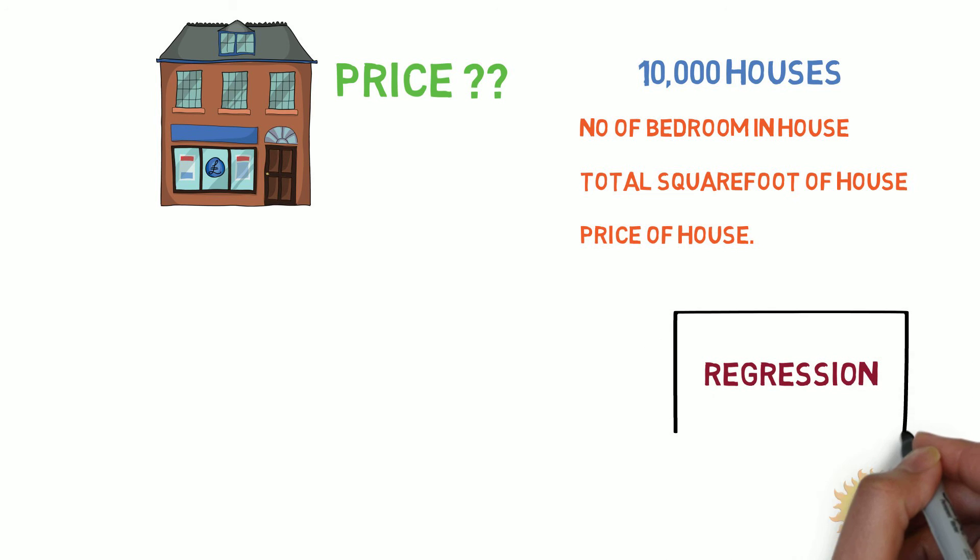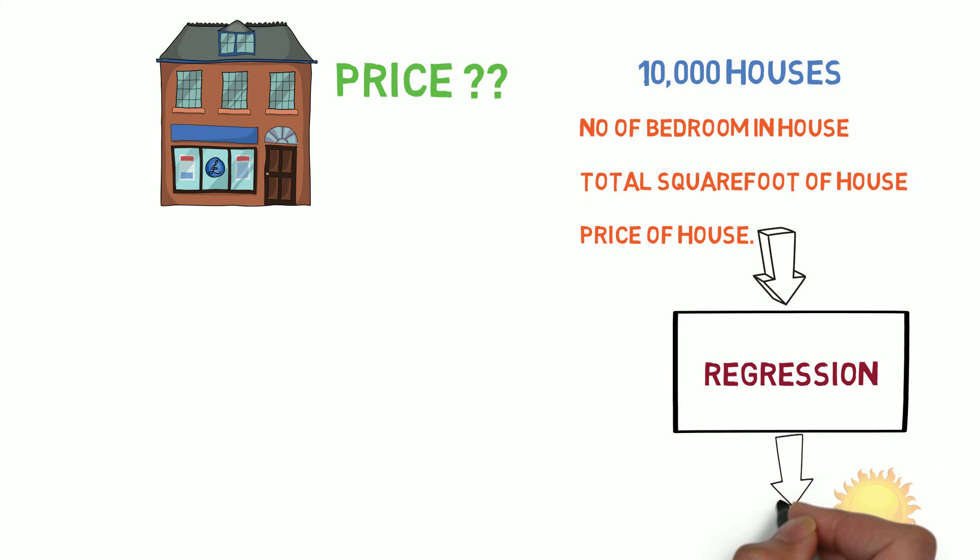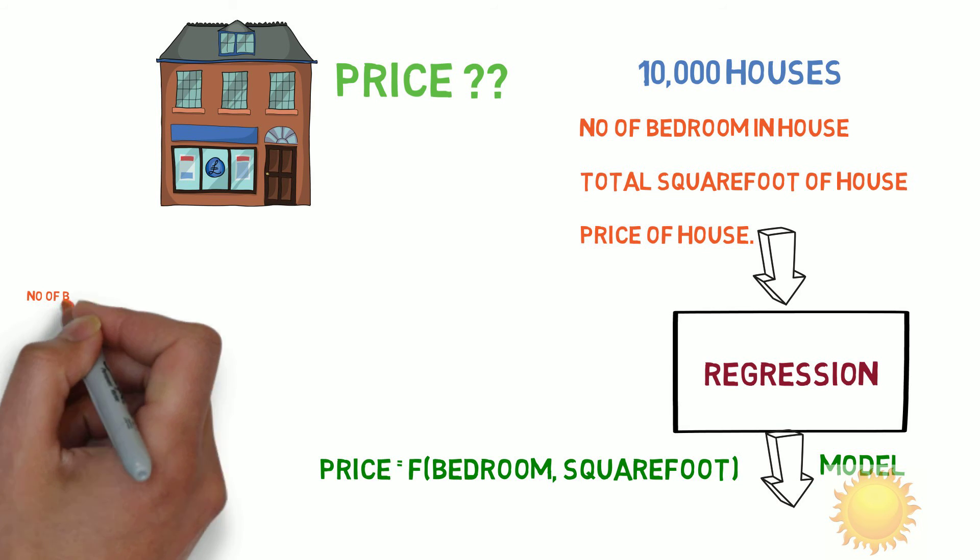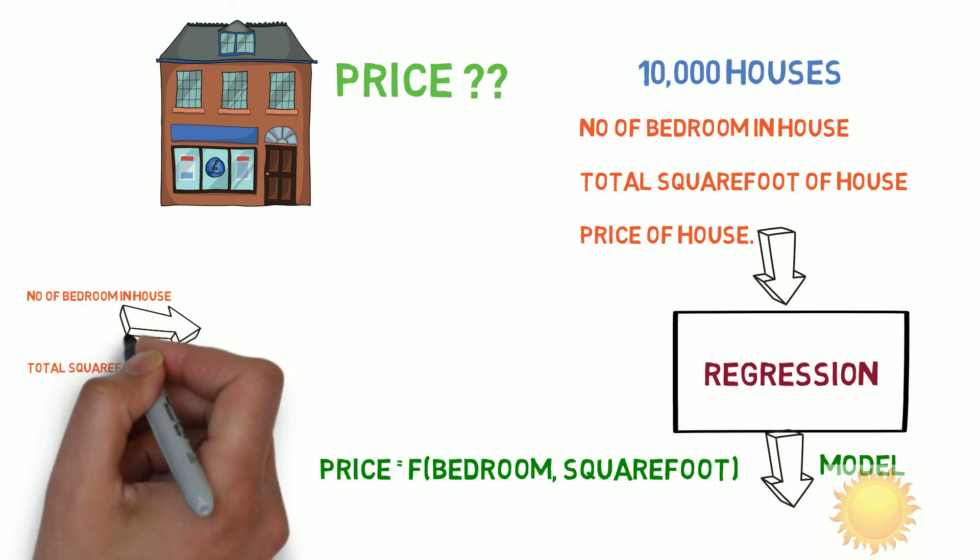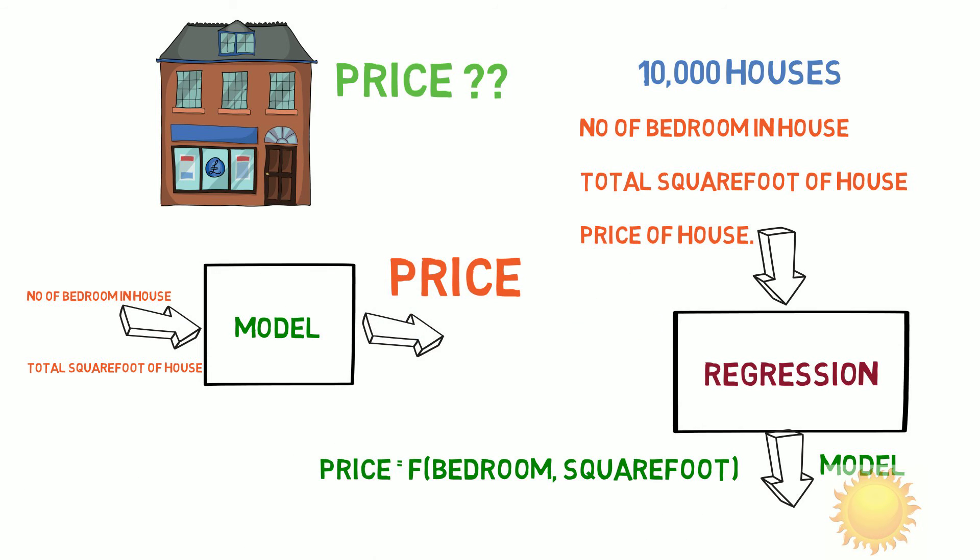We will feed all ten thousand house data into a regression algorithm and it will come up with a model. That model is nothing but the relationship between the input observations. So for new house data, when we feed it to this relationship, it will tell us the new house price. It will predict the new house price for us.